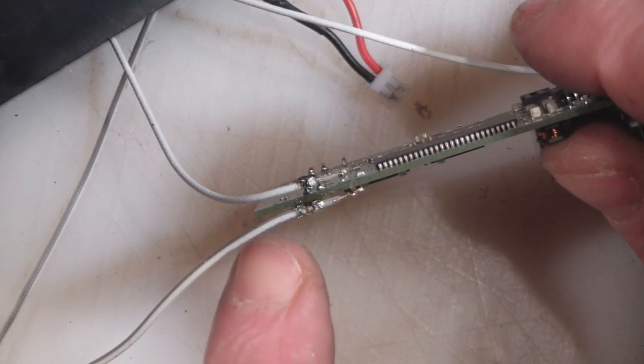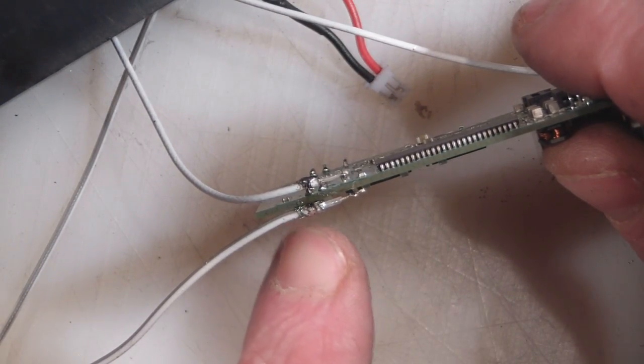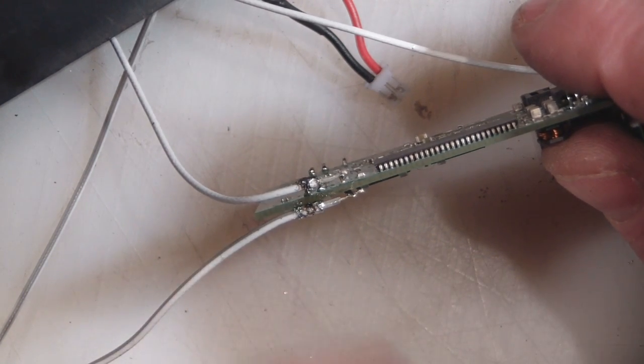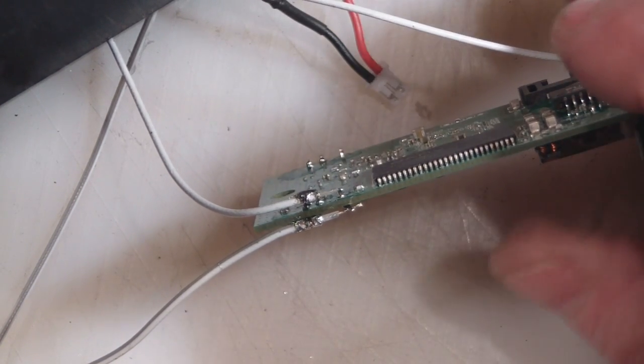You should be able to see there that's the two antennas for the 5GHz all soldered in place. So I'm going to flip it round and then do the 2.4GHz.